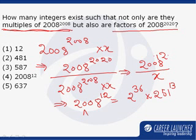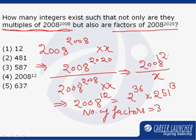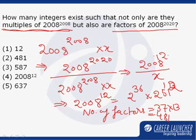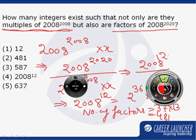So the number of factors will be equal to 37 into 13, which is 481. Note: the exponent used here is 12, not 30.